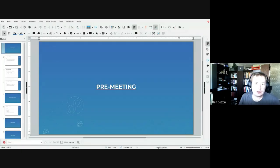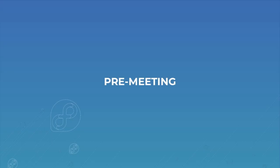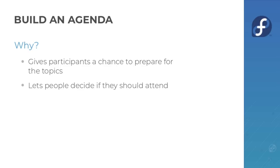Welcome to the IRC meeting training for the Fedora program management team. First, I want to cover what you do before the meeting. The first thing you need to do to run the meeting is to build an agenda. The reason you want to do that is because it gives participants a chance to prepare for the topics — if there are proposals to discuss or bugs to consider, it's a waste of people's time to open the link and first see it during the meeting.